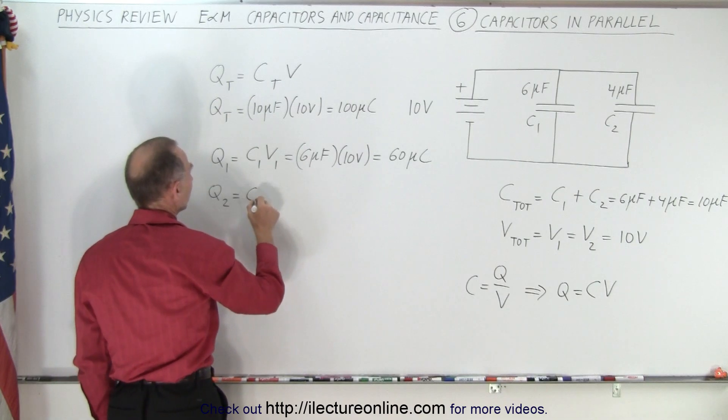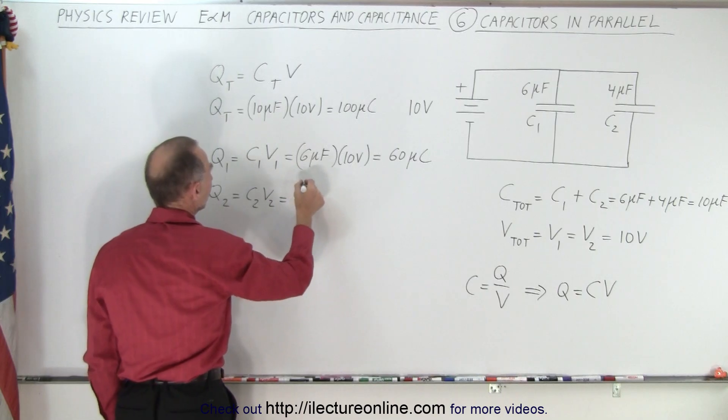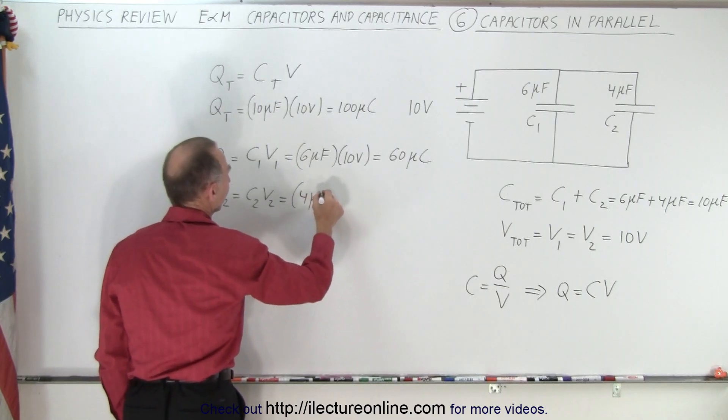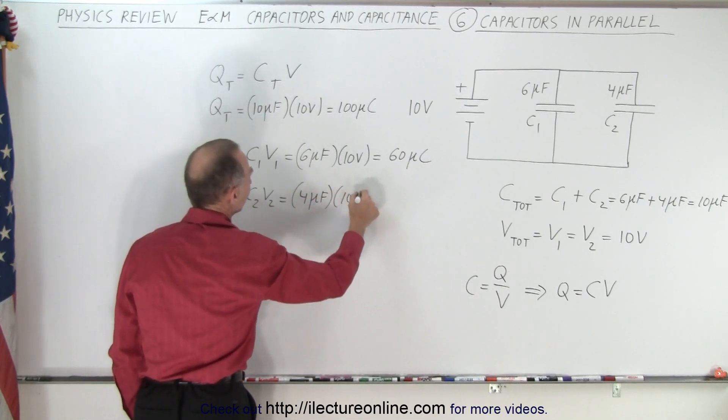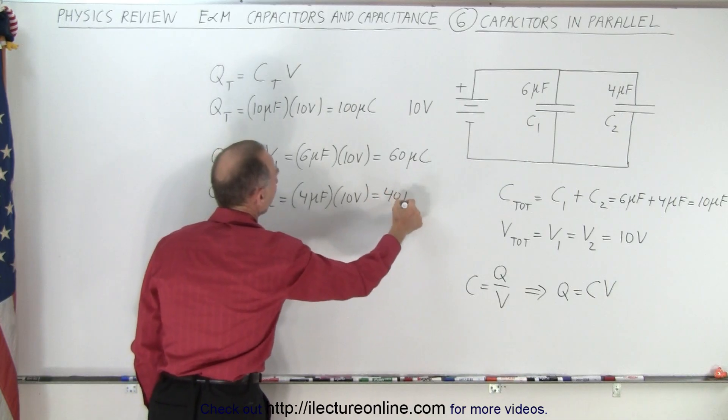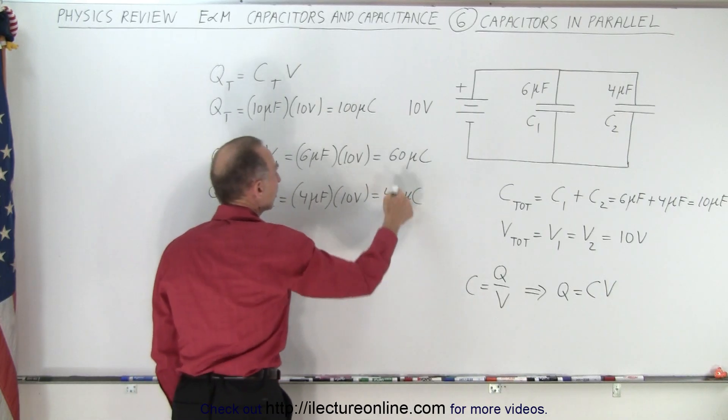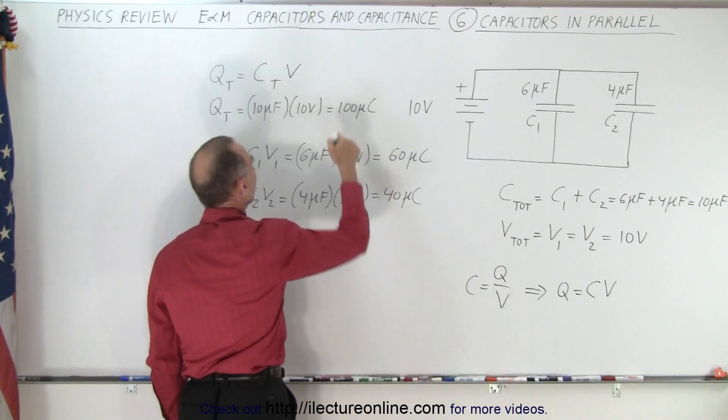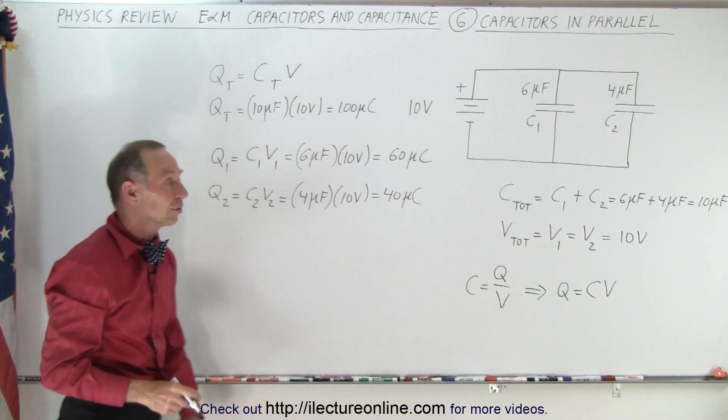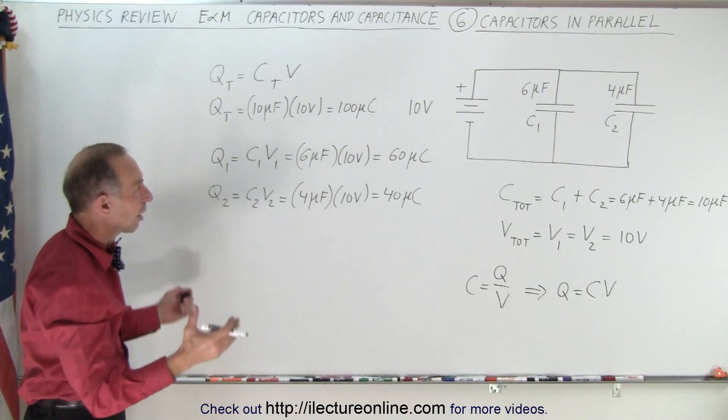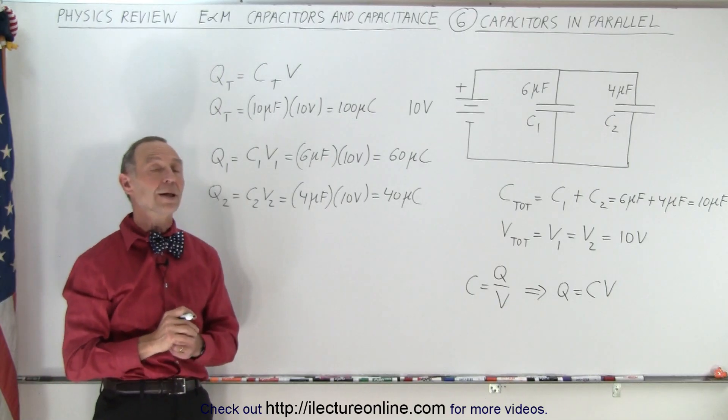And then for the second capacitor, that would be C2V2, which is 4 microfarads times 10 volts, which is 40 microcoulombs. And notice that when you add these two together, you get back to the total charge of both capacitors of 100 microcoulombs. So that's how you deal with capacitors when they're placed in parallel.